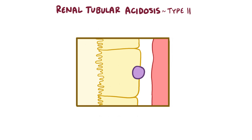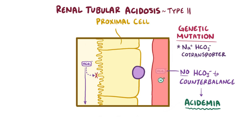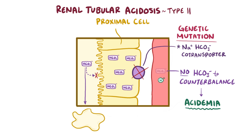In renal tubular acidosis type 2, or proximal renal tubular acidosis, the main issue is that the brush border cells of the proximal tubule are unable to reabsorb bicarbonate. As a result, bicarbonate gets lost in the urine, and this means that there's nothing to counterbalance those hydrogen ions, resulting in acidemia. One known cause is a genetic mutation in the sodium bicarbonate cotransporter on the basolateral surface that makes it less functional. Being less able to move bicarbonate out of the cell alters the intracellular bicarbonate concentration, making it more difficult for bicarbonate to get brought across the apical surface into the cell. As a result, less bicarbonate gets reabsorbed by the brush border cells, and more is left behind in the lumen of the tubule, eventually resulting in acidemia.